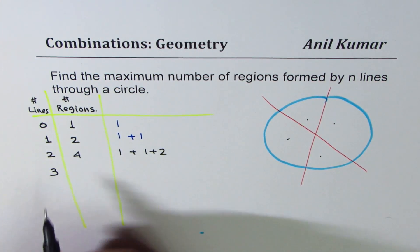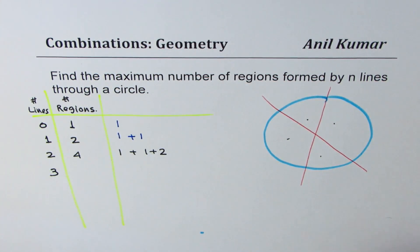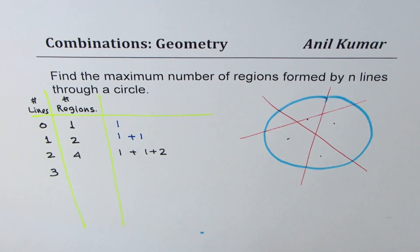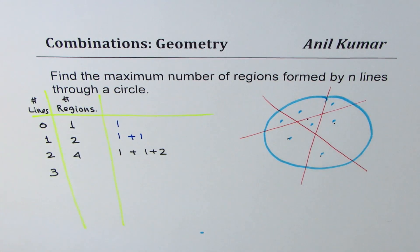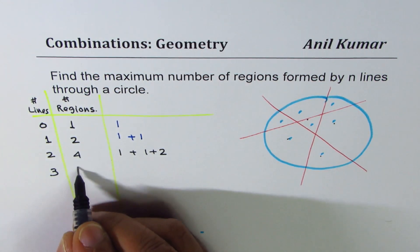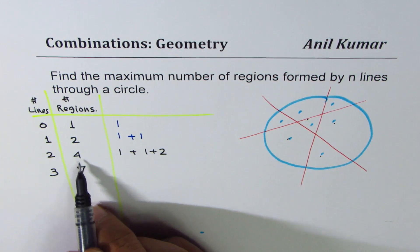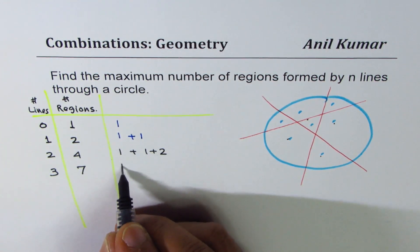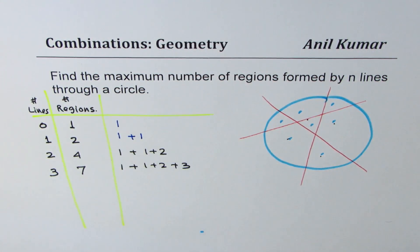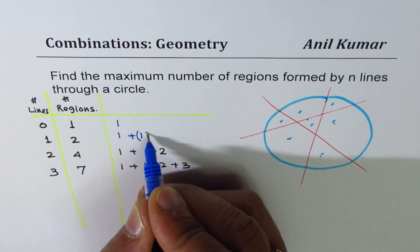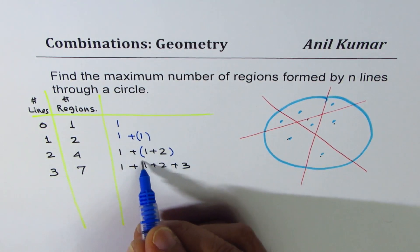If I draw the third line, we can count the number of regions: one, two, three, four, five, six, seven — so we get seven regions. We already had four, so three more were added. We could write this as one plus one plus two plus three.